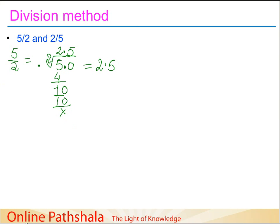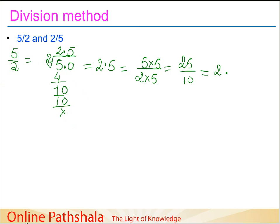So five-halves converted to decimal is 2.5 using the division method. Let's verify: multiplying numerator and denominator by five gives 25 over 10, which is also 2.5. Both methods agree.